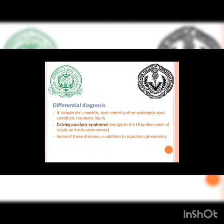Differential diagnosis includes toxic mastitis, toxic metritis, other systemic toxic conditions, and traumatic injury. In toxic mastitis and metritis there is a high rise in temperature, which is not usually seen in milk fever. Also included is downer cow syndrome — paralysis occurring during or due to difficulty in parturition where the obturator nerve gets damaged due to pressure in the pelvic region — as well as aspiration pneumonia.